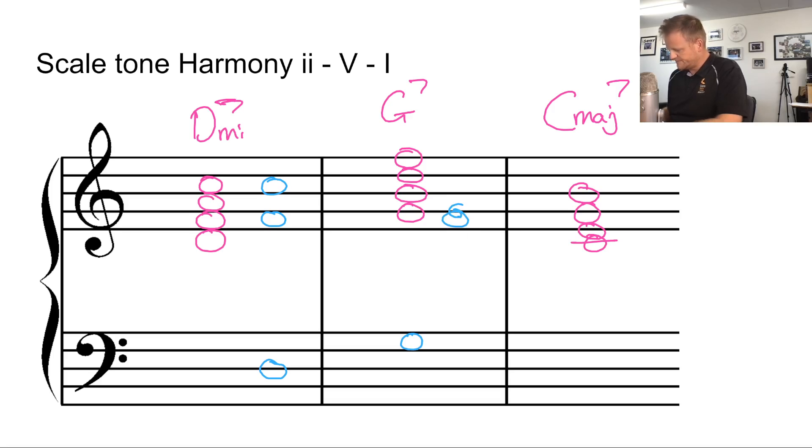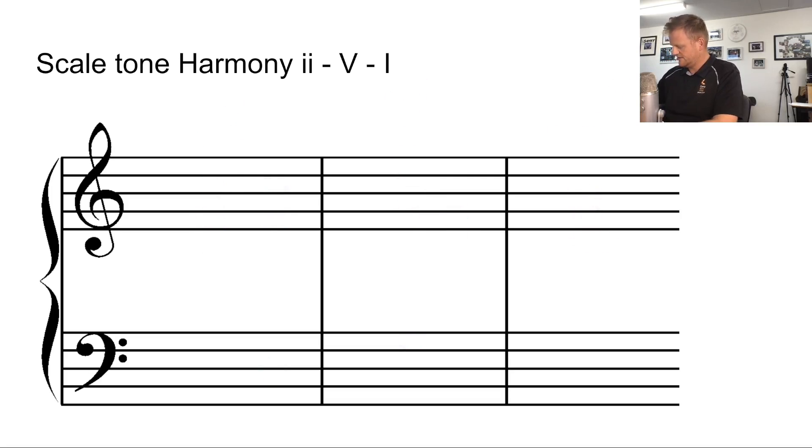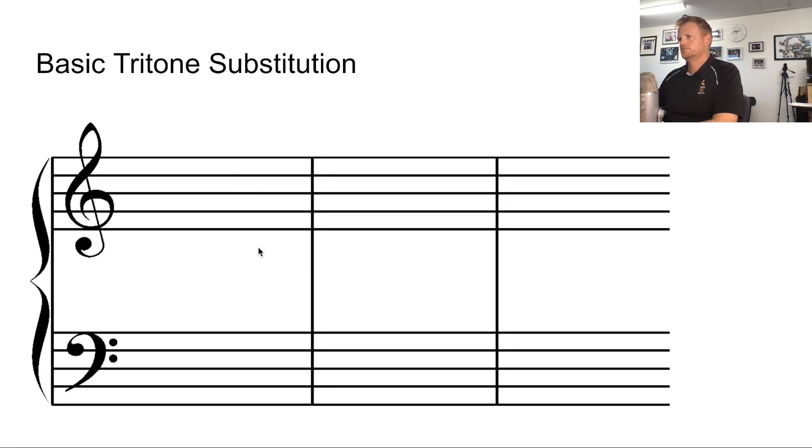Okay, so that would be a better way of thinking about it. Now what I've done there is I put in the third and seventh on each of the chords, and that's important for what we're going to do next. So we'll go to the next screen. I'm going to write the same thing out - D minor, G7, and then C major.